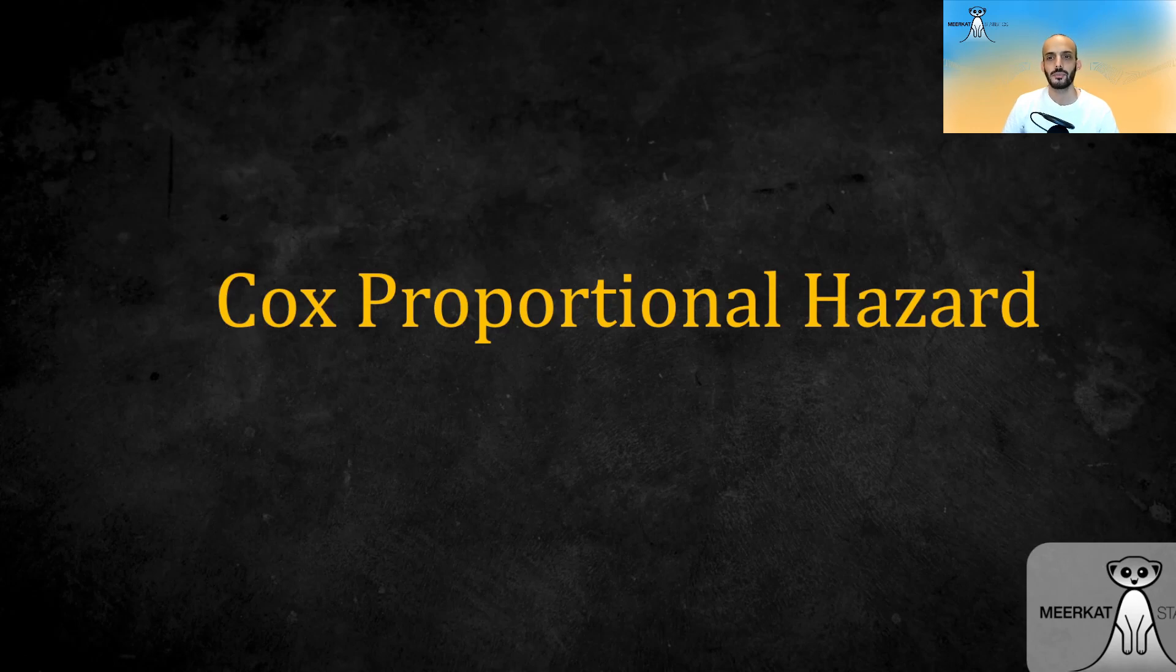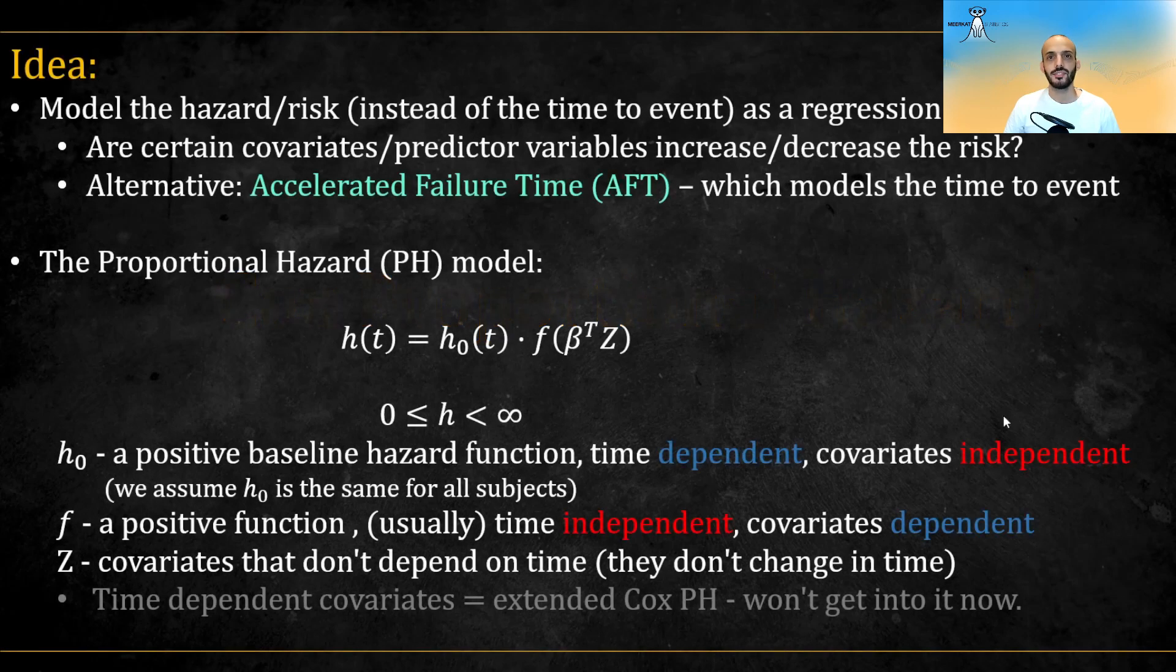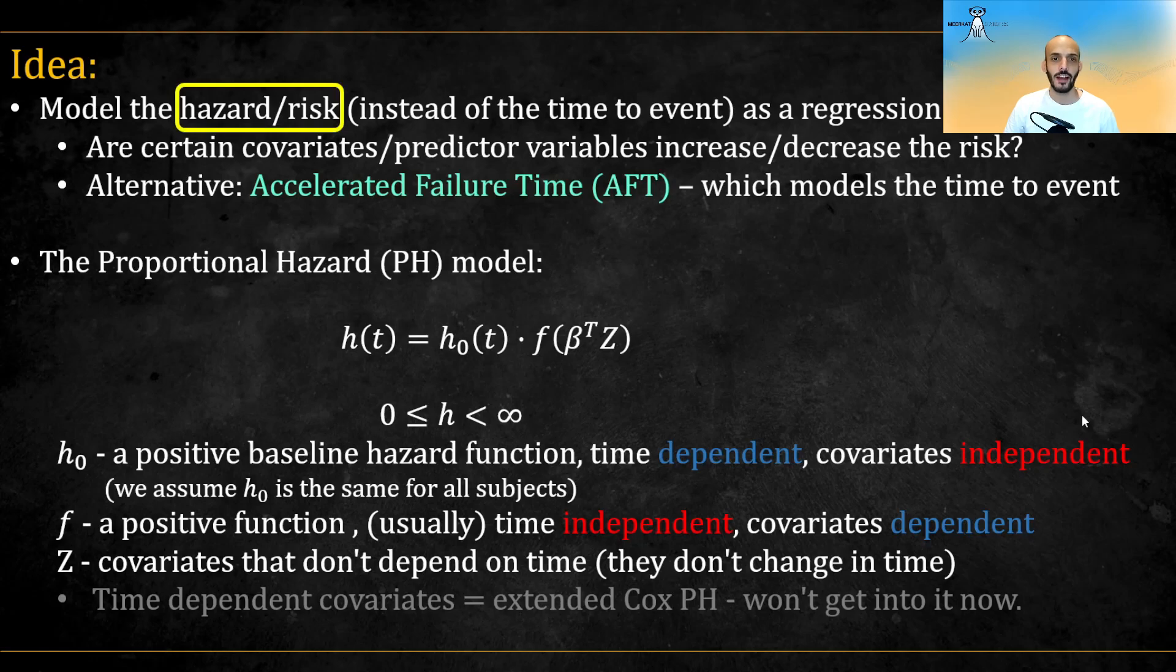Hi guys, in this video we are going to talk about Cox's proportional hazard model. The main idea is to model the hazard or risk function as a regression that depends on some function of the covariates.